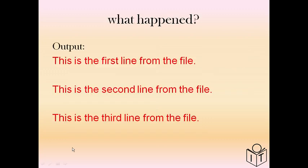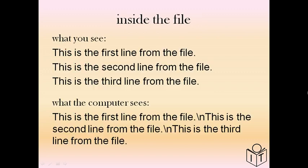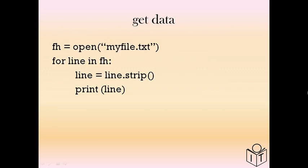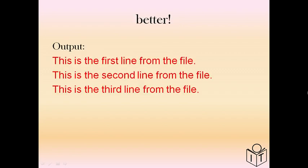When we print each line, something has happened — there's a gap between each line. There's a reason for that. When you look inside the file you'll see three lines of text, but the computer sees something different. It's continuous but there's something in between each line: the backslash n. The computer reads in the text and then sees a symbol that tells it there's a new line. That's the new line symbol, backslash n. So when we get our data in the for loop, we can use strip, which takes out the new line character. Now we can look at our text and there are no gaps.